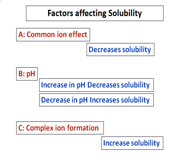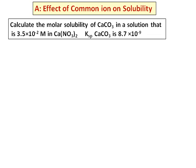Let's see the application of all these in the coming examples. Let's take up the first effect on solubility: the common ion effect. Calculate the molar solubility of calcium carbonate in a solution that is 3.5 × 10⁻² molar in calcium nitrate. The Ksp of calcium carbonate is given.